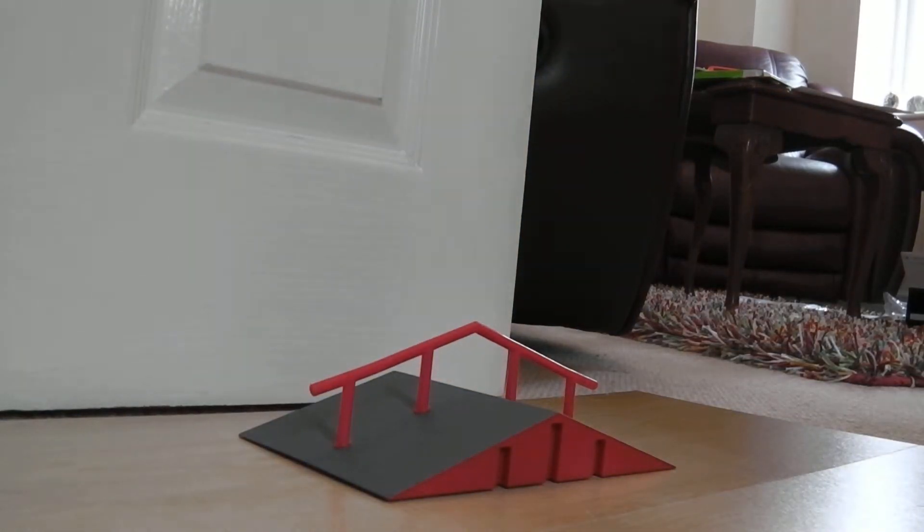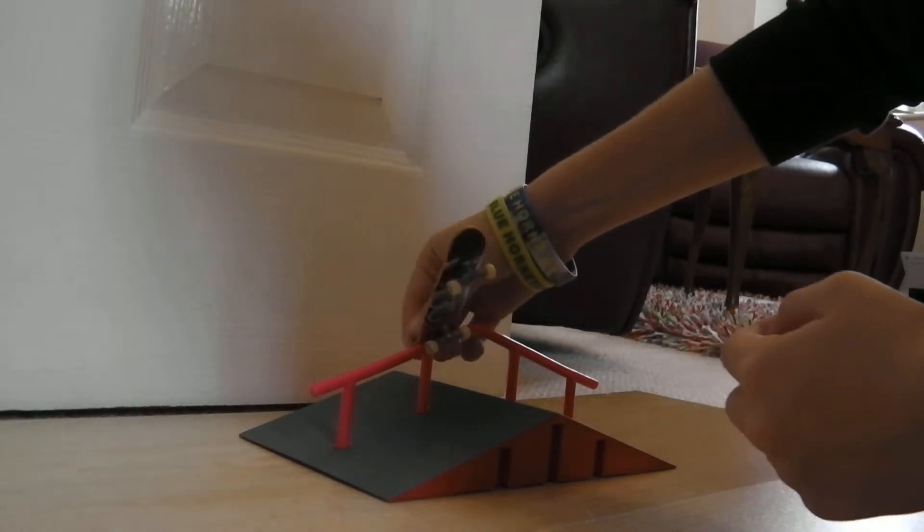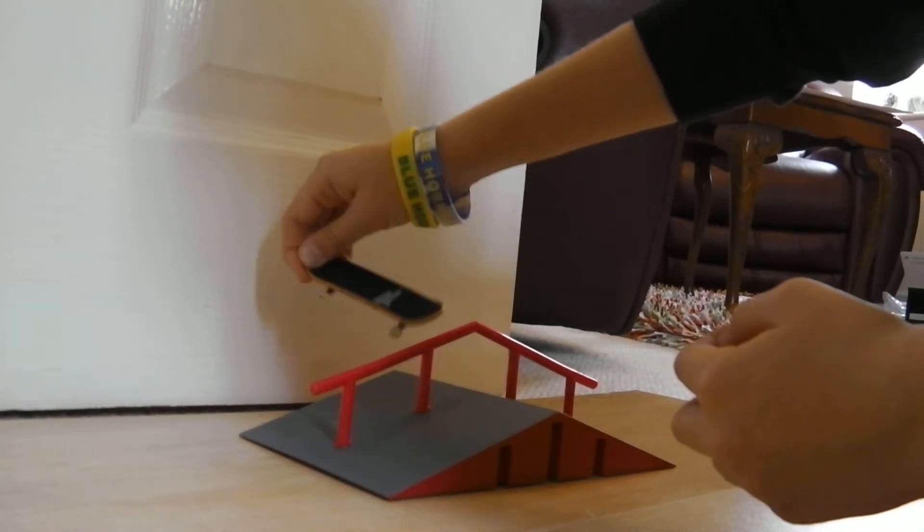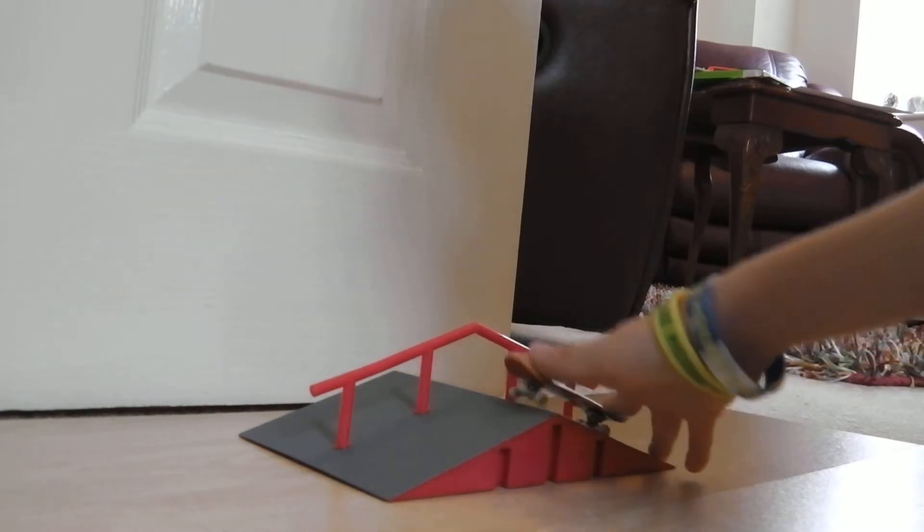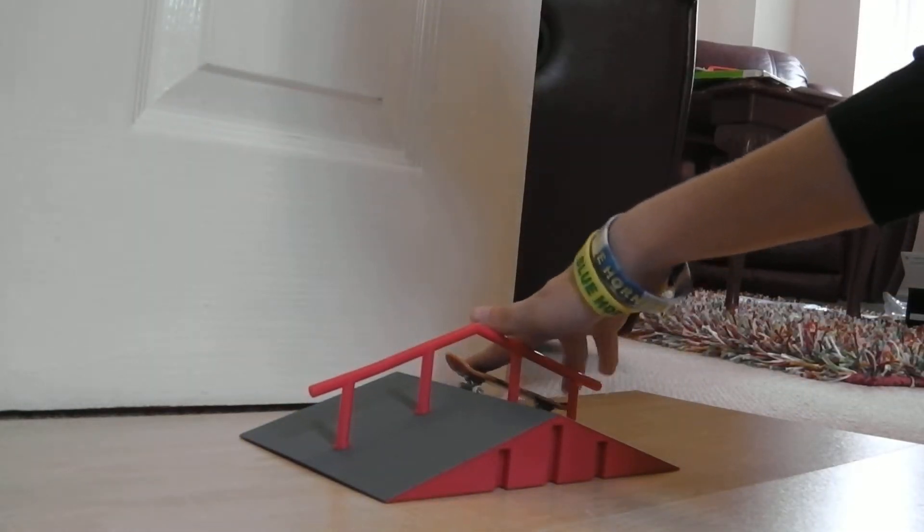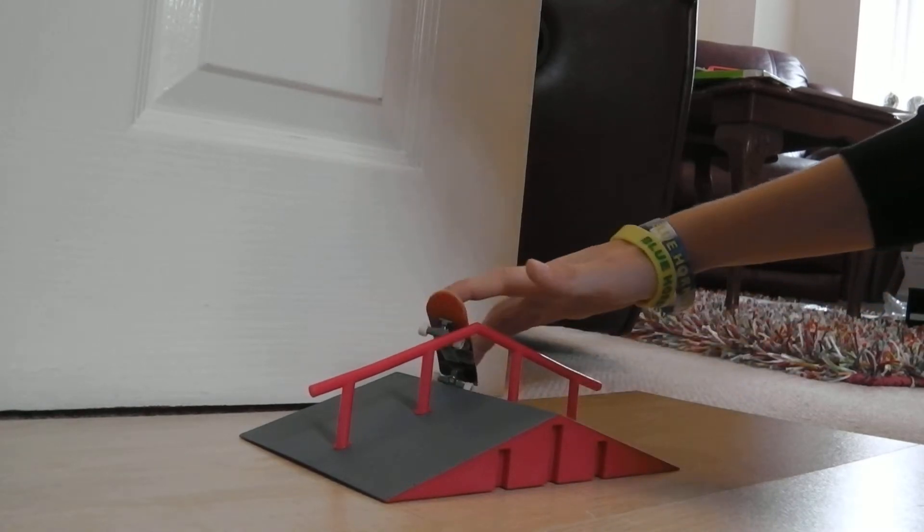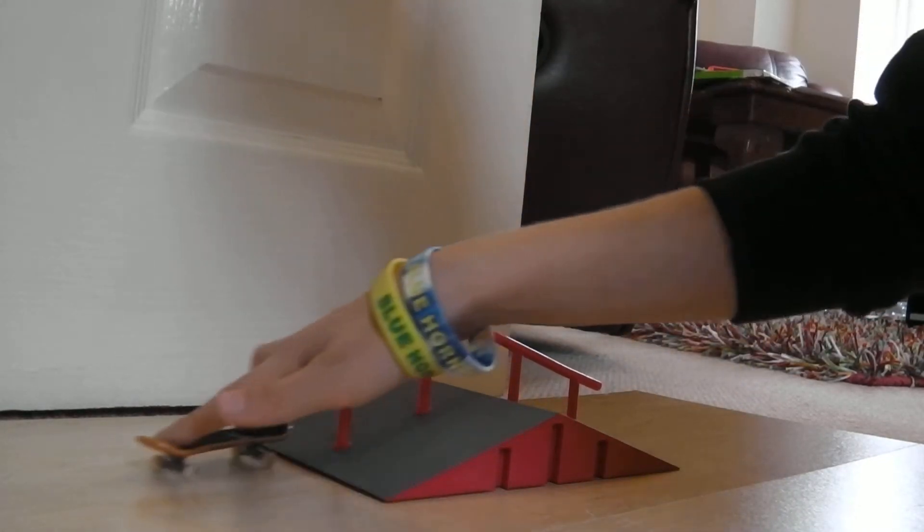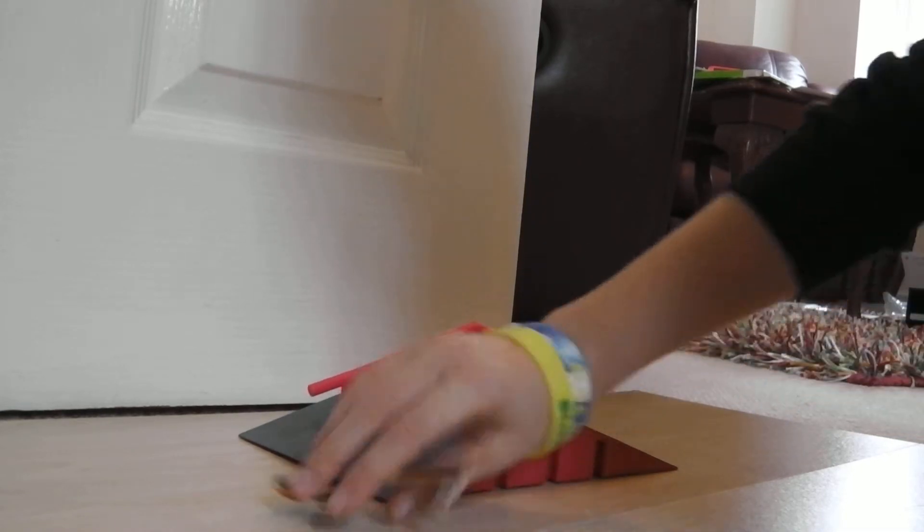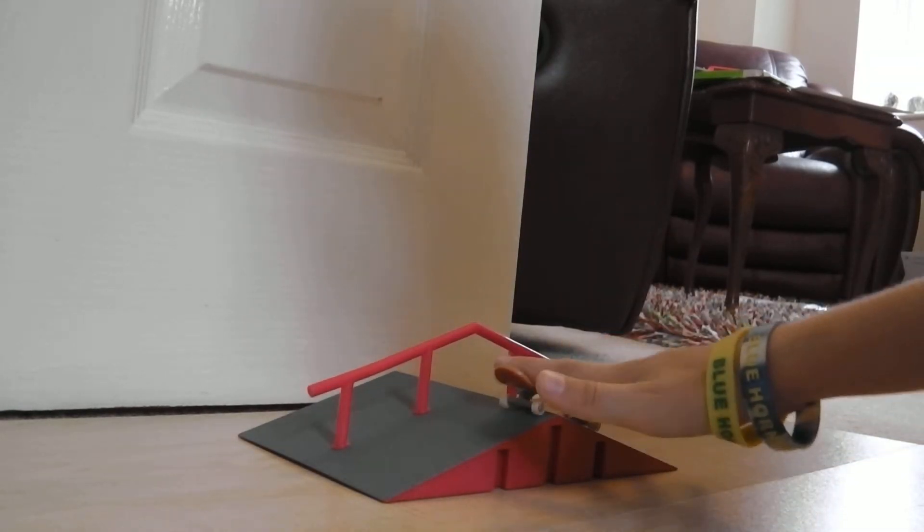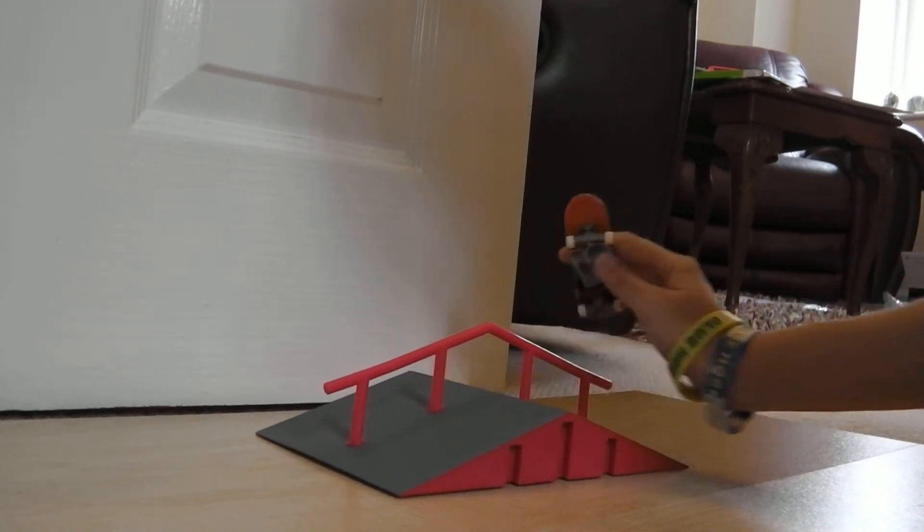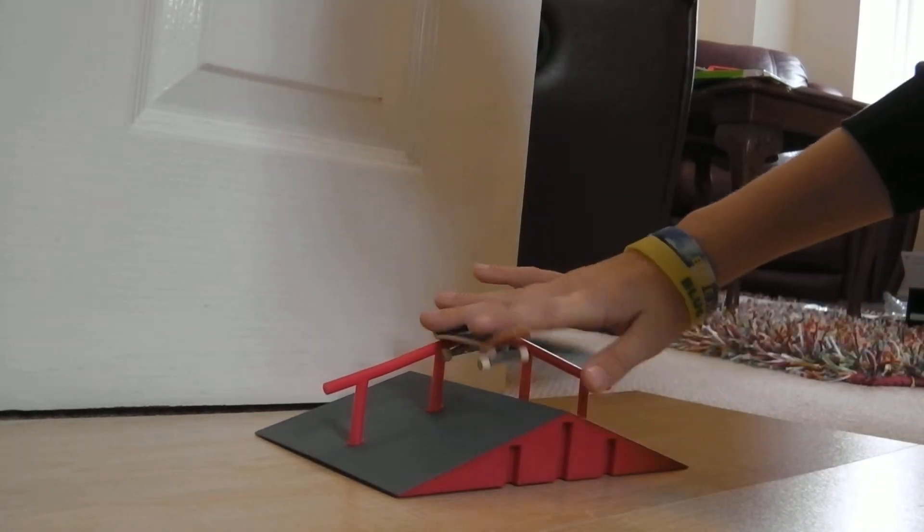Alright, now I will show you nose slide and tail slide. For the nose slide, just slide on the nose of your board. Tail slide, slide on the tail of your board. This is probably easier for you to see from this side. So this is the nose slide, and the tail slide is basically the same, except on the tail. You can go into manual and just go into tail slide.